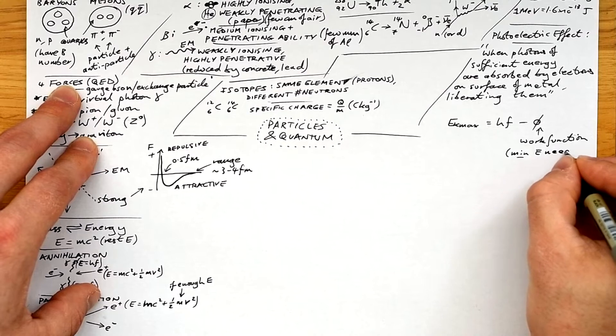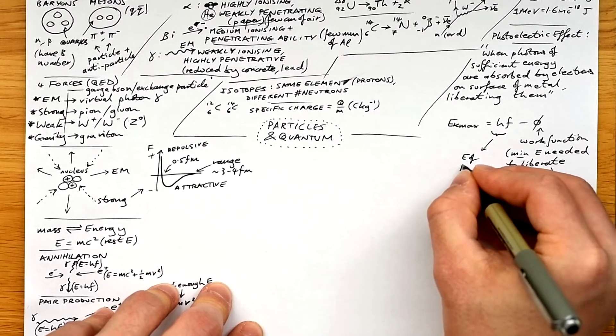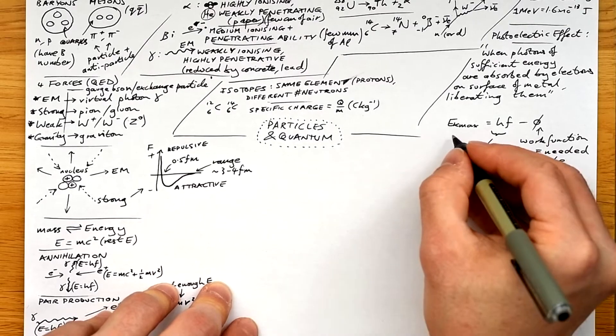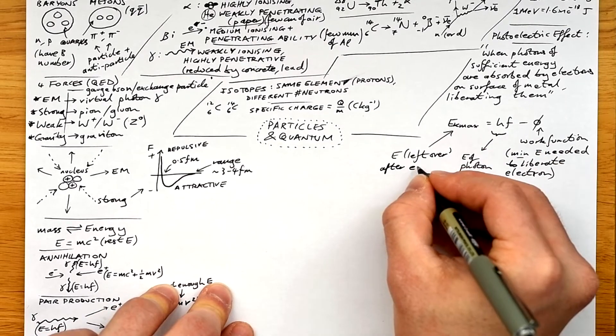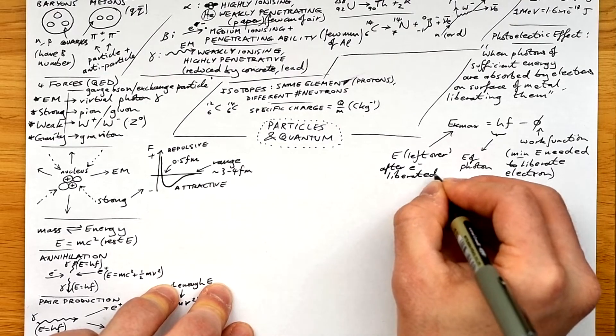The equation is EK max is equal to HF minus phi, HF being the energy of the photon that goes in, phi being the work function, that's the minimum energy needed to liberate electrons. And so taking one away from the other gives you the kinetic energy left when an electron has escaped.